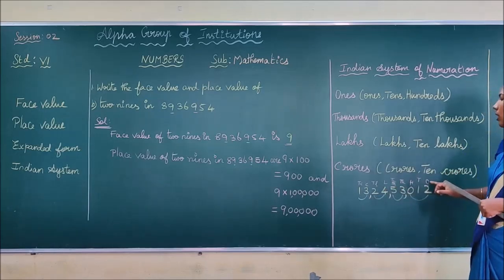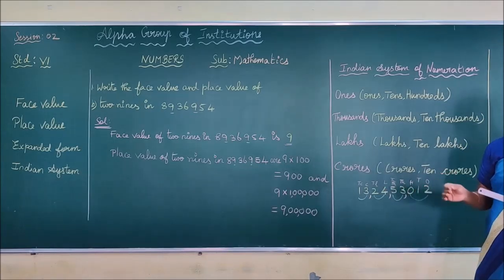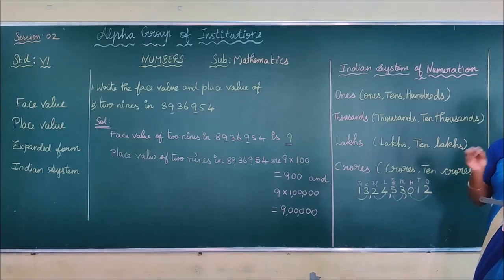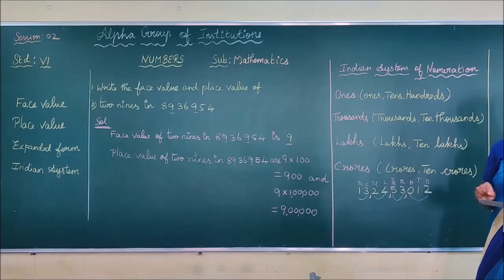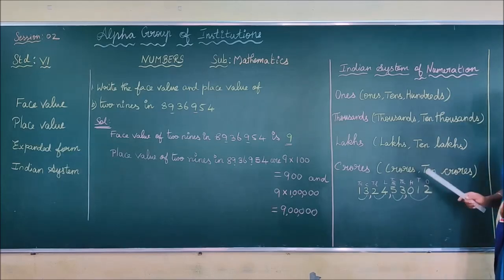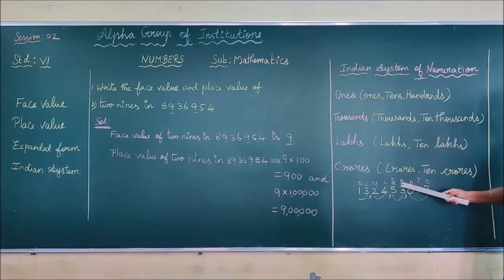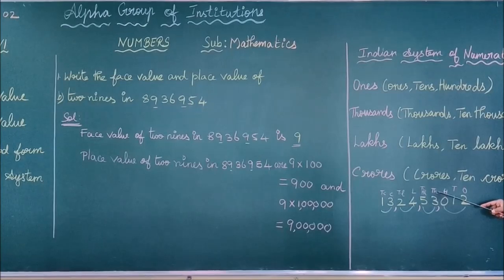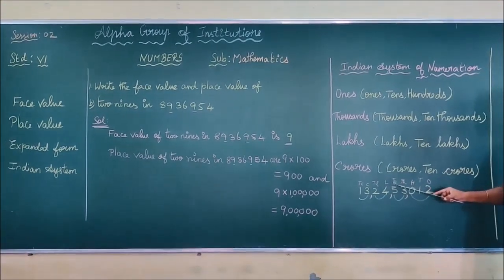I will tell you an easy method to write the place value. Once the number is given, first use a pencil to write the place value abbreviations above each digit. For ones, use the letter O. For tens, use T. For hundreds, H. For thousands, TH. Since you already have T for tens, you use TH for thousands. For ten thousands, T.TH.